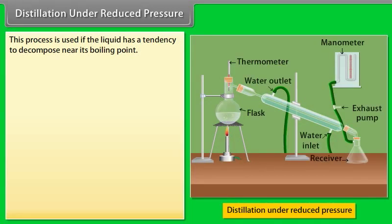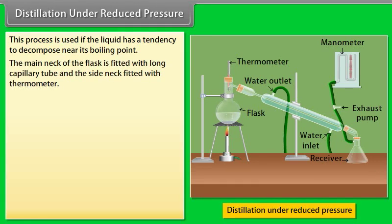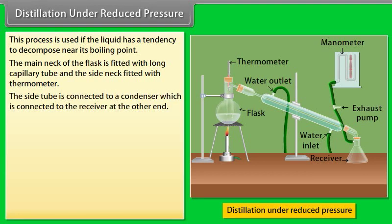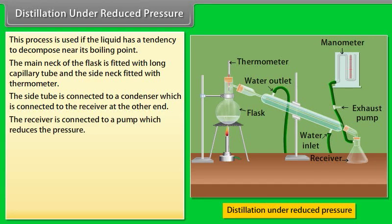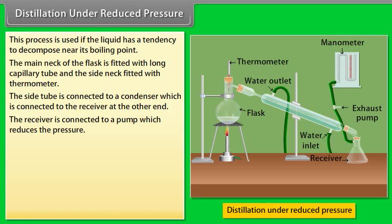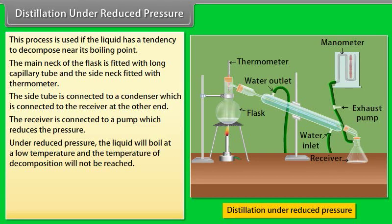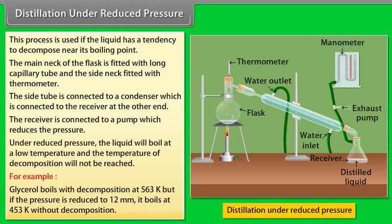Distillation under reduced pressure: This process is used if the liquid has a tendency to decompose near its boiling point. The main neck of the flask is fitted with a long capillary tube and the side neck with a thermometer. The side tube is connected to a condenser, which is connected to a receiver, and the receiver is connected to a pump which reduces the pressure. Under reduced pressure, the liquid boils at a lower temperature and the temperature of decomposition is not reached. For example, glycerol boils with decomposition at 563 K, but if pressure is reduced to 12 mm Hg, it boils at 453 K without decomposition.